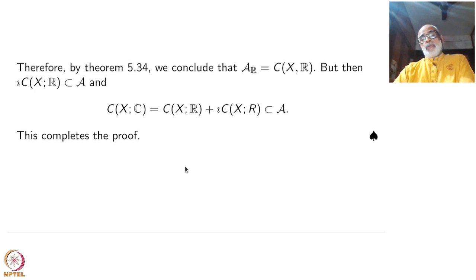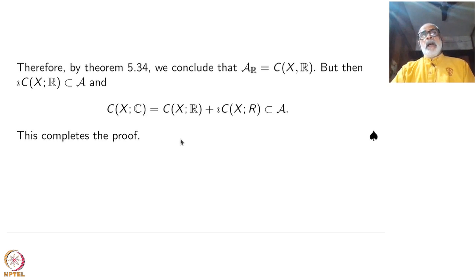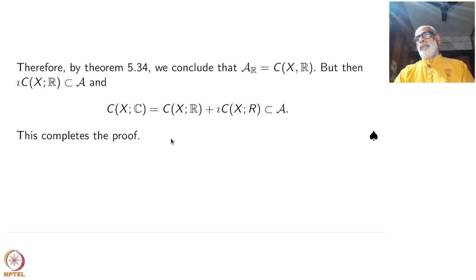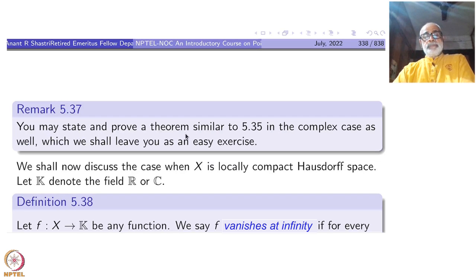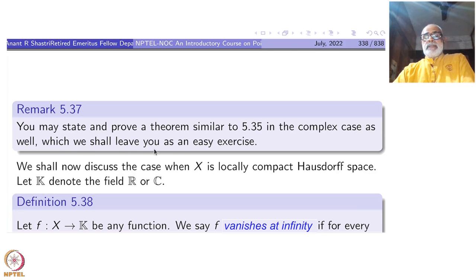Now let us go to the extensions of this one: the locally compact case. Once again, the Alexandrov one-point compactification plays the role, and our job will be quite simple when we pass to Alexandrov's compactification and apply this theorem. We may state and prove a theorem similar to 5.35 due to Gadi in the complex case, which we shall leave as an exercise.